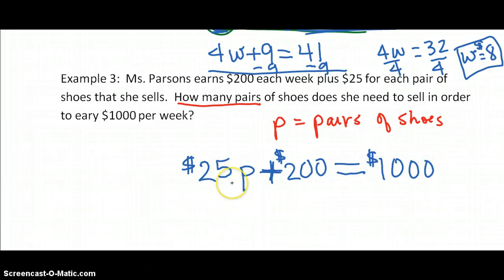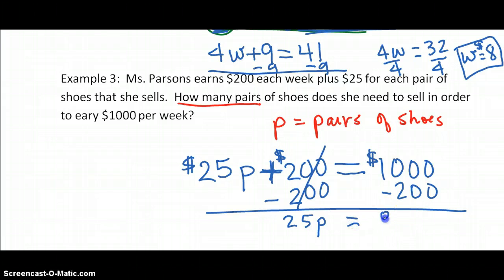So how many pairs of shoes does she need to sell? So I'm going to do a little two-step and subtract $200 from both sides, and $25P equals $800, and we're going to divide by $25, and she needs to sell 32 pairs of shoes.